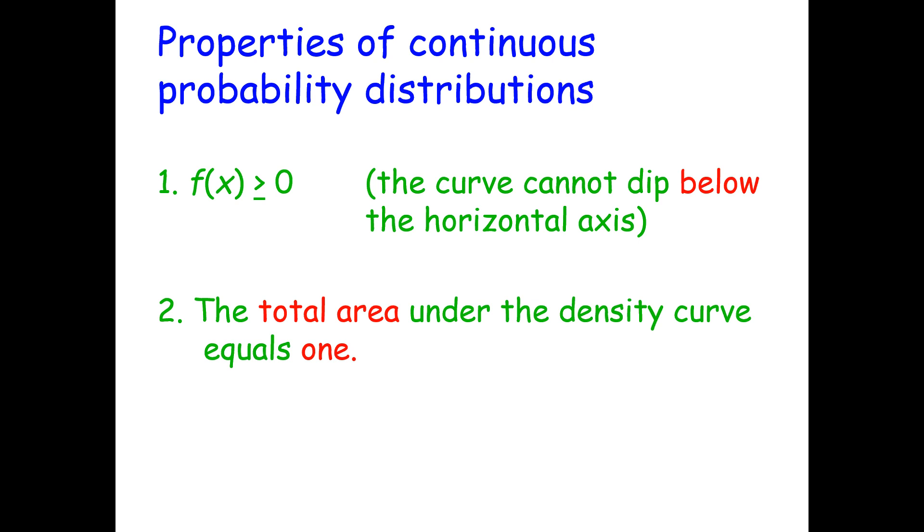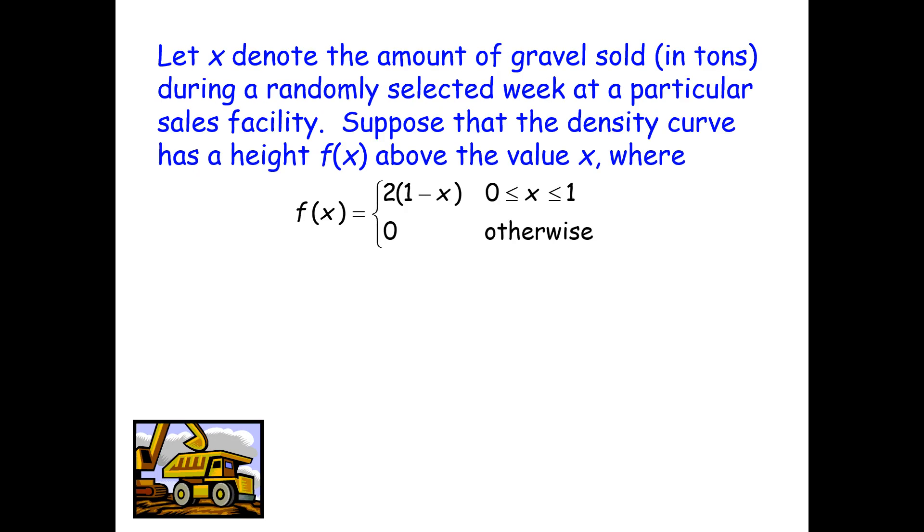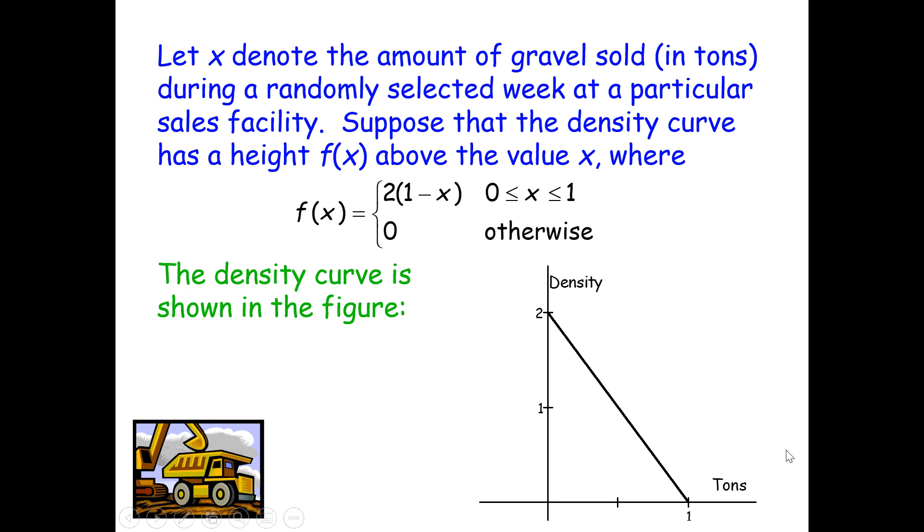Let's look at an example. We're going to let x denote the amount of gravel sold in tons during a randomly selected week at a particular sales facility. Suppose the density curve has a weight f(x) above the value x, where f(x) equals 2 times the quantity 1 minus x for when x is between 0 and 1, but it's 0 otherwise. The density curve is shown in this figure. Notice that for any number larger than 1, our value is 0.